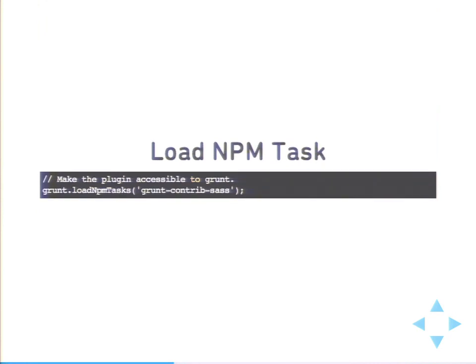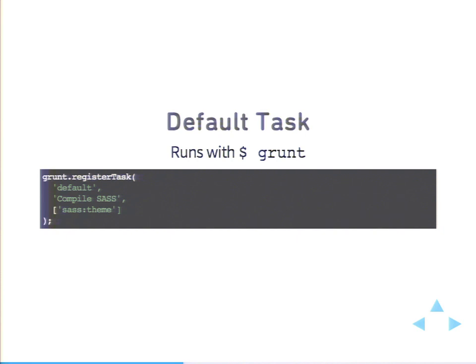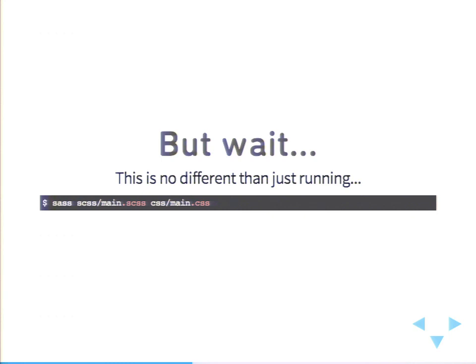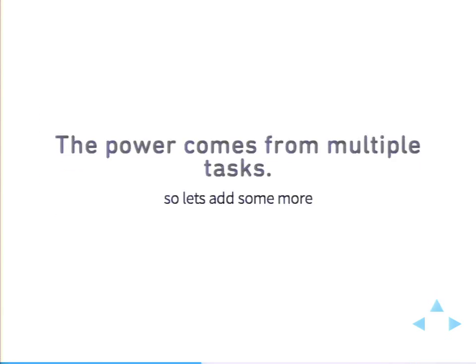We'll want to make sure that the node plugin is available, so we'll have grunt load it with grunt.loadNpmTasks as a method. Then we'll want to define the required default action — the default action is whatever runs whenever you type in grunt. This most often is like building out our project, deploying it, whatever. You'll probably want to provide a little bit of help information to make it more usable for other people. But as you can see, there's not really that much difference than just running Sass. The real power comes from adding more tasks and targets.